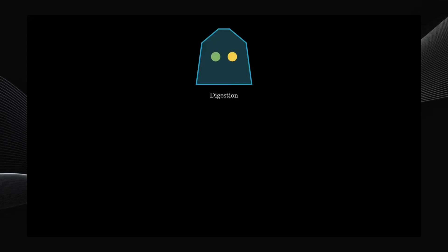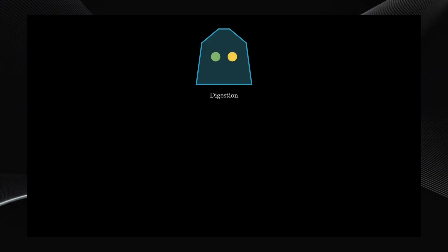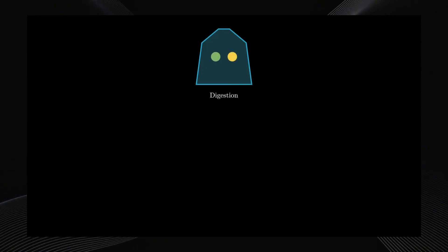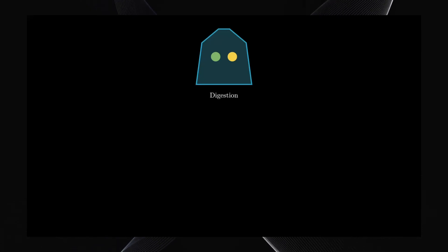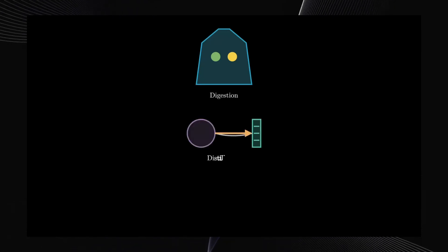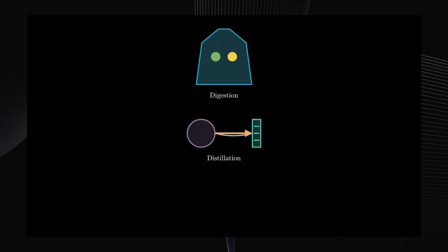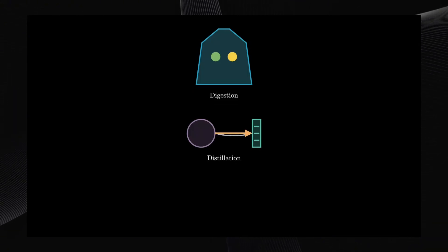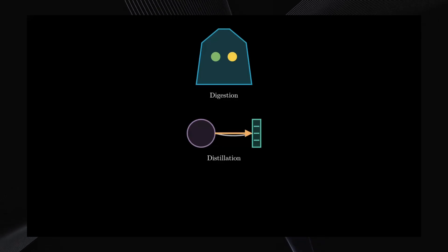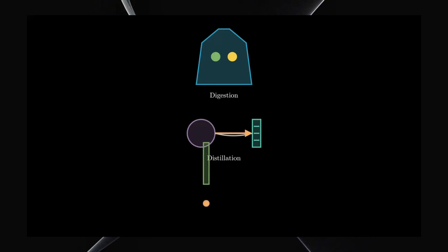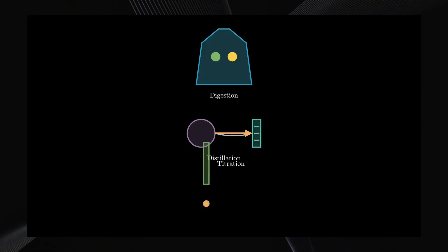Notice the custom-designed flask, structured to facilitate even heating and efficient mixing of reagents. The reagent indicators represent the acid and catalyst essential to breaking down organic materials. Next, observe the distillation stage. Here, a round-bottom flask connects to a condenser via a curved tube, guiding vapor flow efficiently. This mechanism separates nitrogen compounds from the digest. Finally, the titration stage is presented. The burette releases titrant in a controlled manner — every drop counts in quantifying the nitrogen concentration. The full video is over five minutes long, so I'm just showing you a snippet. I'll link to the page in the description.